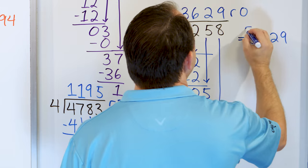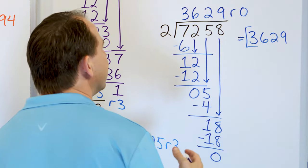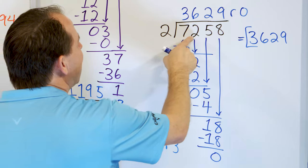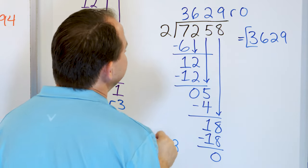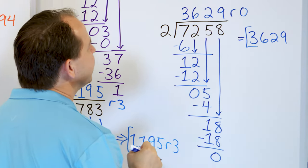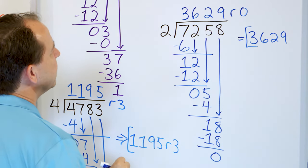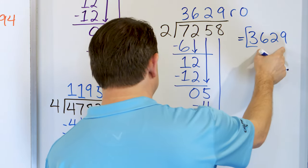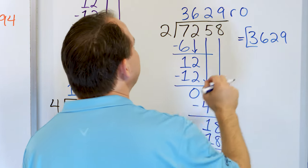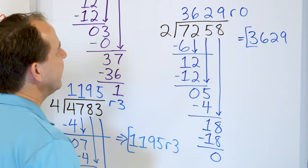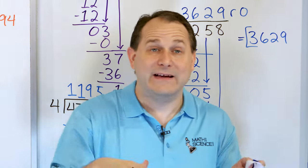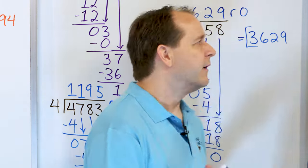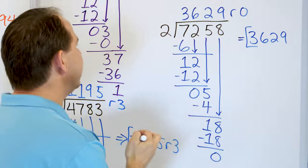The final answer is 3,629. If we had 7,258 pancakes and 2 plates, every plate would have a stack of 3,629 pancakes tall, every stack exactly the same, no leftovers, no remainder.